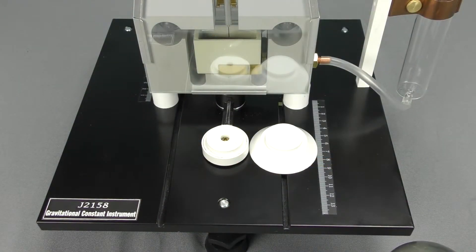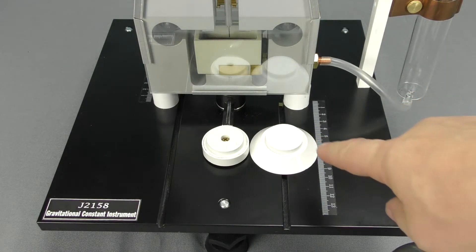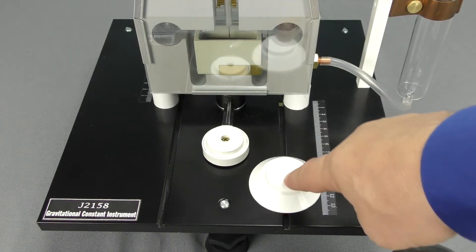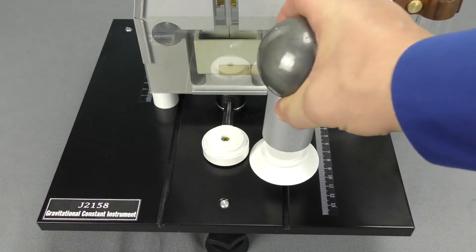Another experiment that you can do is to verify the inverse square law. You will need these white caps that fit into the little slots right next to the calibrated scale. You would set this up as normal, except place these on the caps.